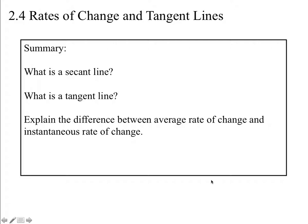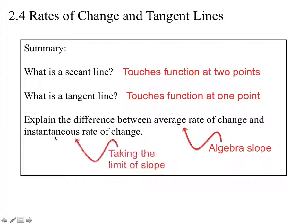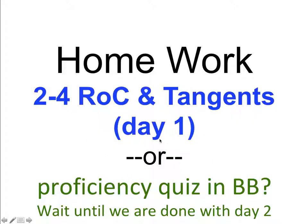To summarize: secant lines touch a function at two points — that's algebra, the average rate of change. Tangent lines touch the function at one point, which requires us to take the limit of the slope. The average rate is your algebra slope, your secant line. The instantaneous rate is taking the limit of that slope, because instantaneous implies one point in time. That is the limit method we just learned. You should be able to start day one of your homework, and if you're going to try the proficiency quiz, wait until the next day when we finish up the section.